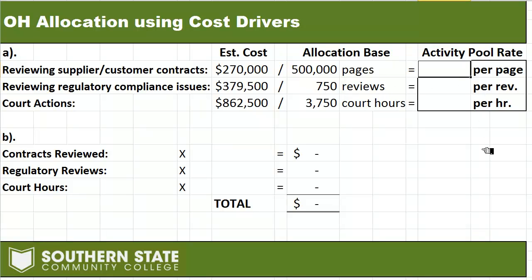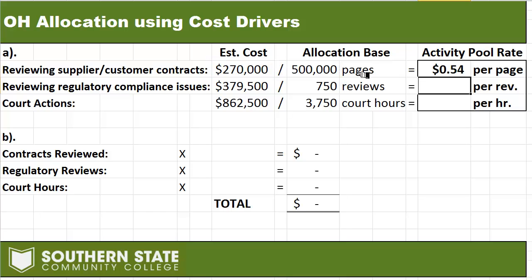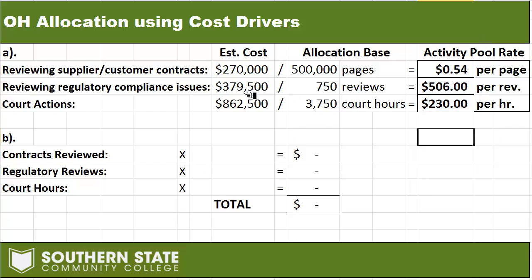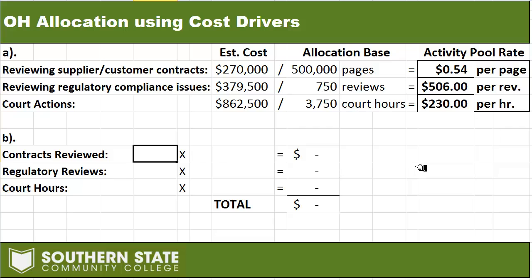We need to come up with an activity pool rate — a per-page and per-hour number for all those items. I take $270,000 and divide it by the 500,000 pages in that allocation base, and I get $0.54 per page. Then $379,500 divided by 750 reviews is $506 per review. We spent $862,500 on court actions, divide that by 3,750 court hours, and we get $230 per hour — which is probably pretty close to what a lawyer makes per hour.